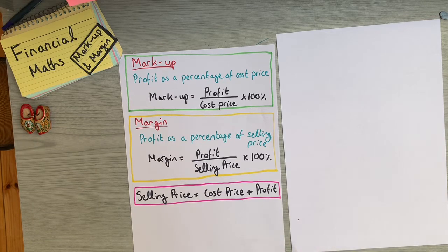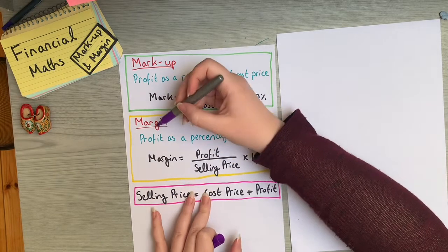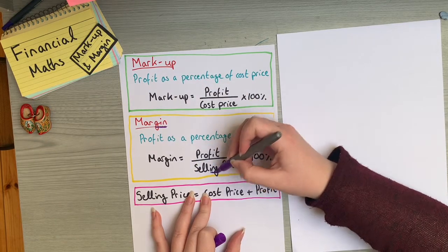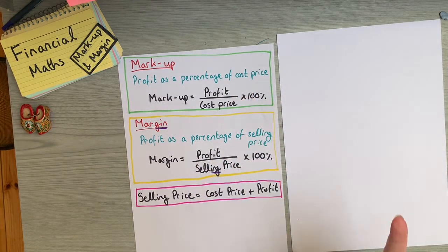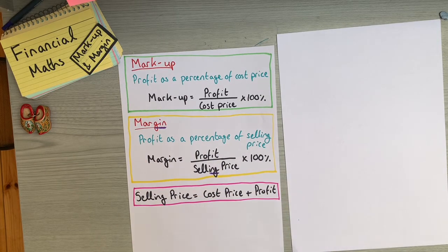It can be easy to confuse these two since they sound quite similar, so here's a trick to remember which formula is which. Margin has a 'g', 'i', and 'n' in it — and so does the word 'selling'. The only difference between these two formulas is what's on the bottom, so margin goes with selling price. Then all you have to remember is that markup is the other one, associated with cost price.